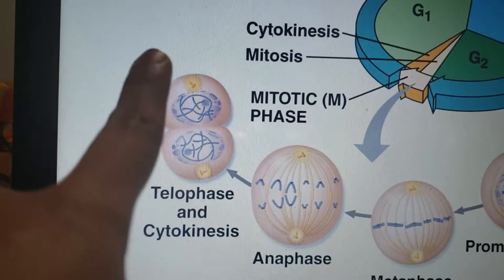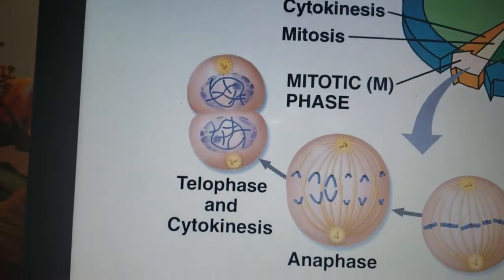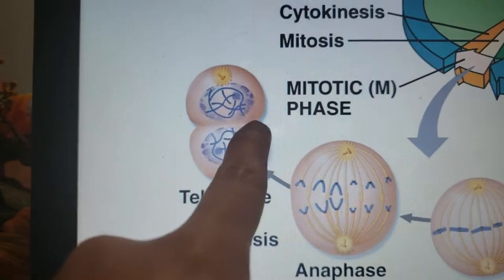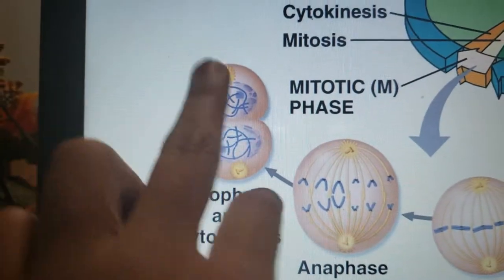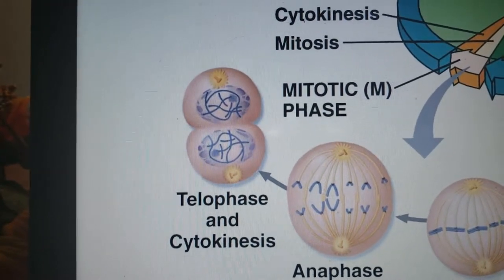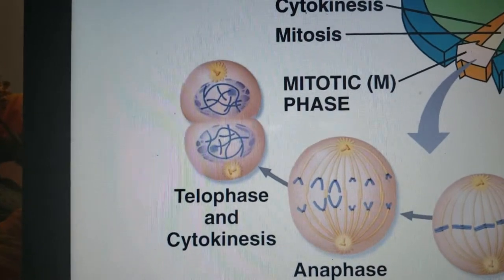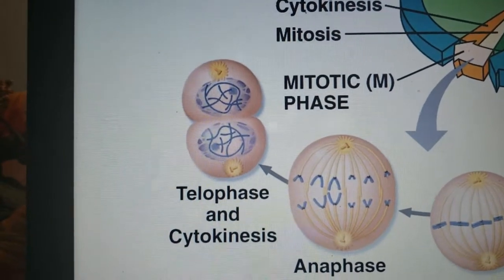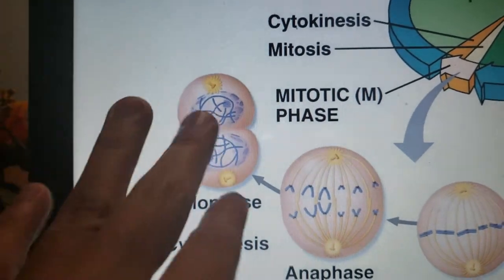In cytokinesis, we have the separation of the cytoplasm. In eukaryotes, we see a cell plate formed right here until both cells separate. In animal cells, we see a cleavage furrow right here, and after this the cell divides in two and continues its work.